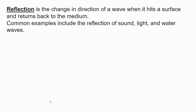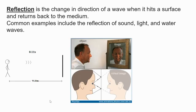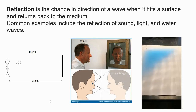Reflection is the change in direction of a wave when it hits a surface and returns back to the medium. Common examples include the reflection of sound, like echo, light, like a mirror, and water waves, like a ripple tank.